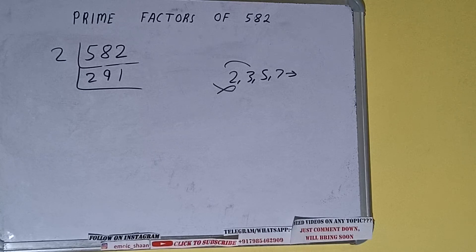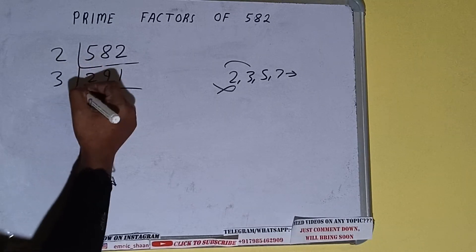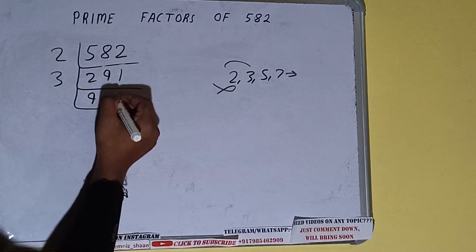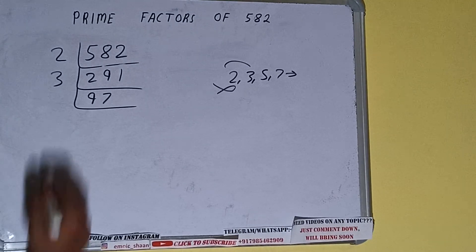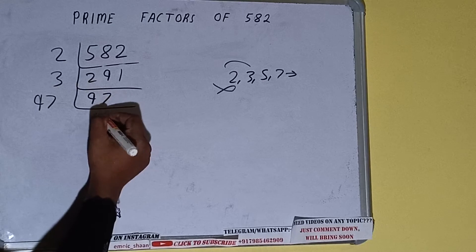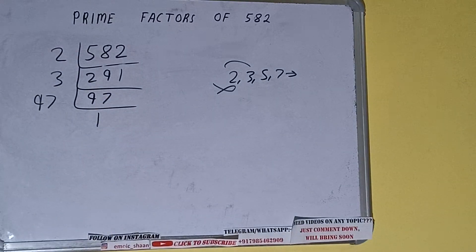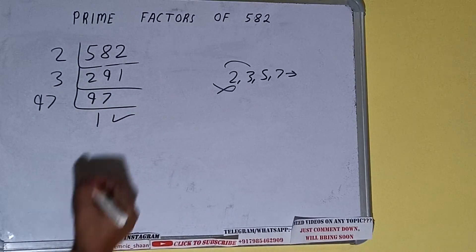97 is further not divisible by 3. And also, 97 is a prime number, so it is only divisible by itself, that is 97. Once we do so, we'll be getting 1. Once we get 1, we need to stop.